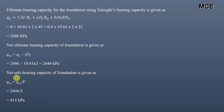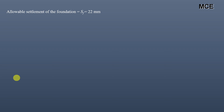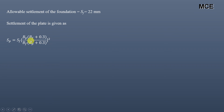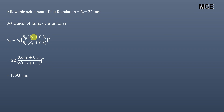Now we find the net allowable bearing pressure using the settlement criterion. The allowable foundation settlement is 22 mm. The settlement of the test plate is calculated using: Sp = Sf × [Bp(Bf + 0.3)] / [Bf(Bp + 0.3)]², where Bp = 0.6 m (plate width) and Bf = 2 m (foundation width). Substituting values gives the settlement of the test plate as 12.93 mm.